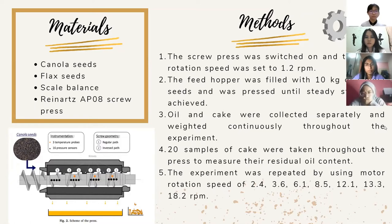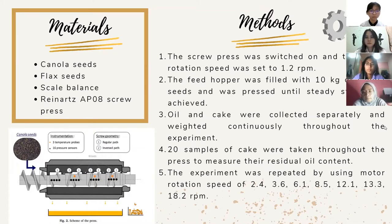Firstly, the screw press was switched on and the motor rotation speed was set to 1.2 rpm. The feed hopper was filled with 10 kg of canola seeds and was pressed until steady state was achieved. Steady state is achieved when the pressure, temperature, and energy consumption within the equipment remain constant. Oil and cake were collected separately and weighed continuously throughout the experiment. 20 samples of cake were taken throughout the press to measure their residual oil content. The experiment was then repeated using motor rotation speeds of 2.4, 3.6, 6.1, 8.5, 12.1, 13.3, and 18.2 rpm.